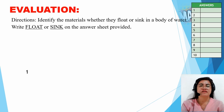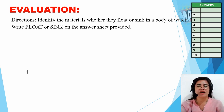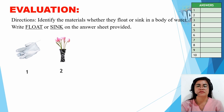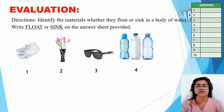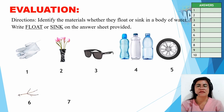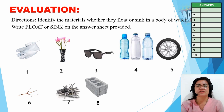Before we end our lesson for today, let us check whether you understand our topic. For the evaluation, write float or sink on the answer sheet provided. Number one: plastic gloves. Number two: flower vase made of glass. Number three: shades. Number four: plastic bottles. Number five: wheels. Number six: twigs. Number seven: iron rod. Number eight: hollow block. Number nine: coins. Number ten: corrugated roofing.